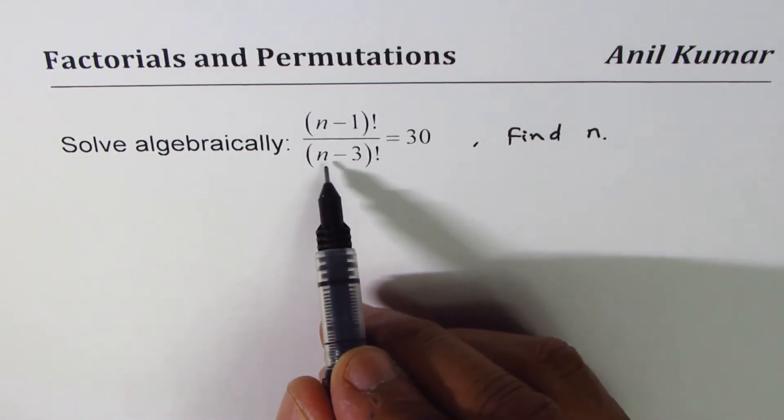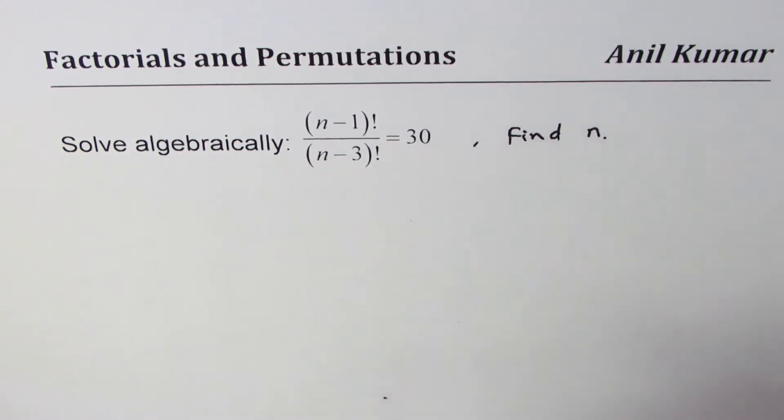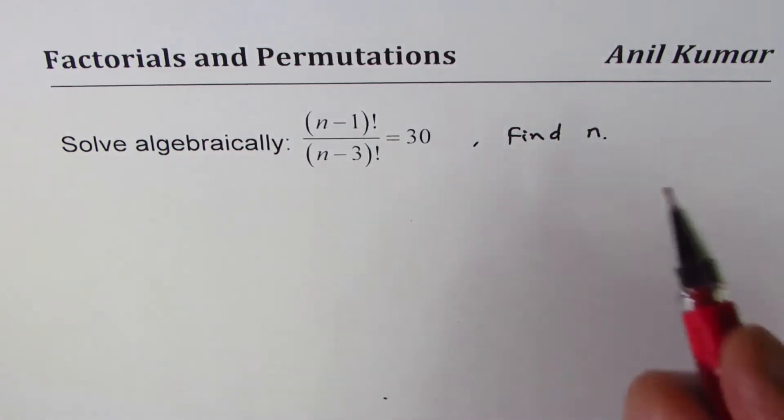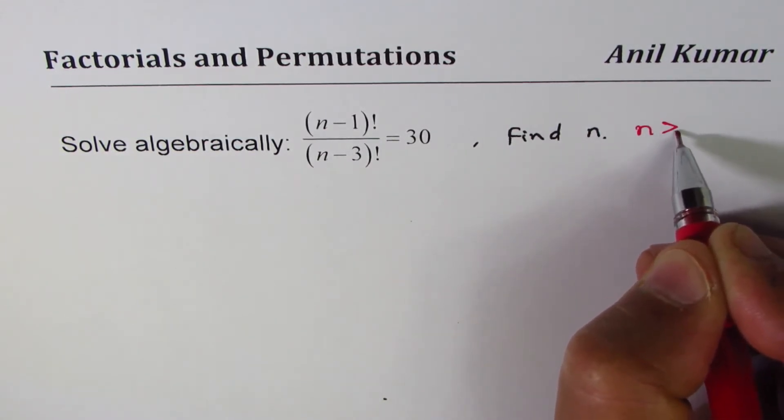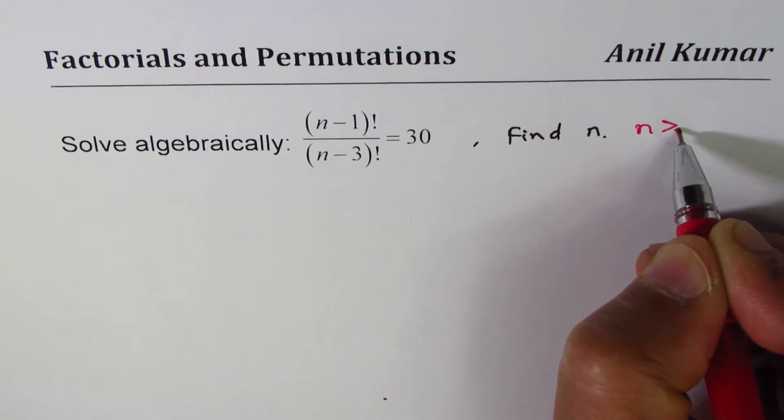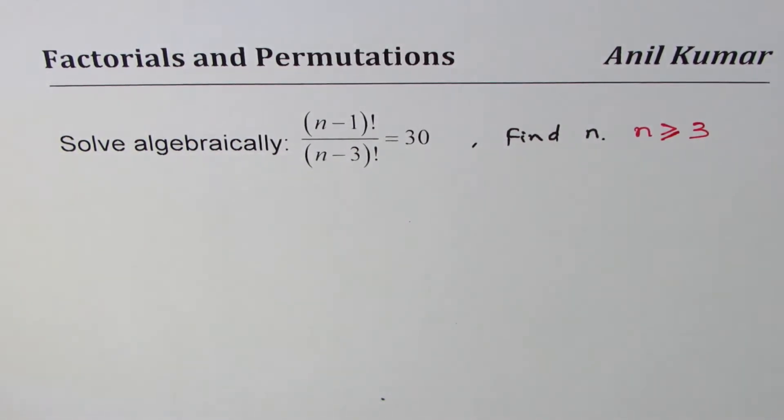Now if I have (n-1)! and (n-3)!, n has to be greater than or equal to 3. So from here we can write our condition that n should be greater than or equal to 3, otherwise the factorial is always of a positive number. Zero factorial, as you know, is 1.